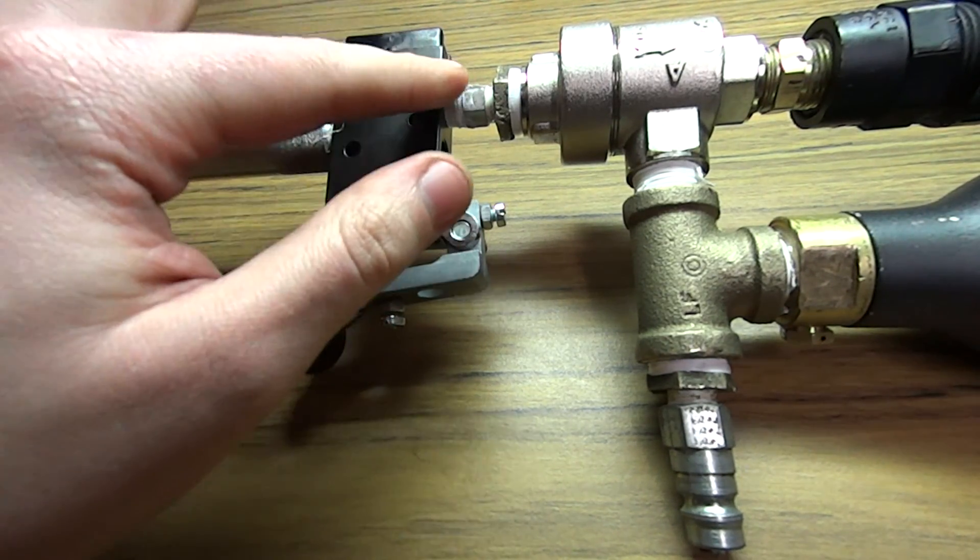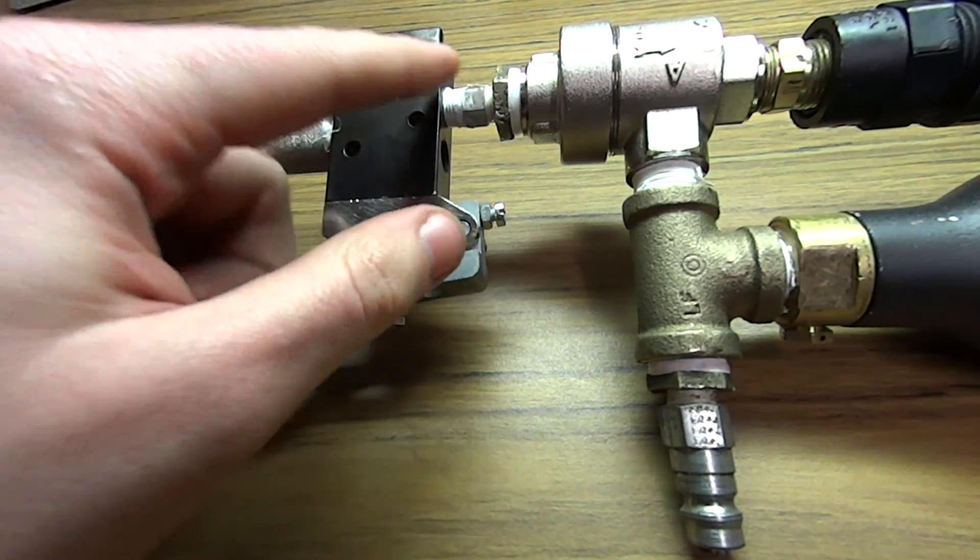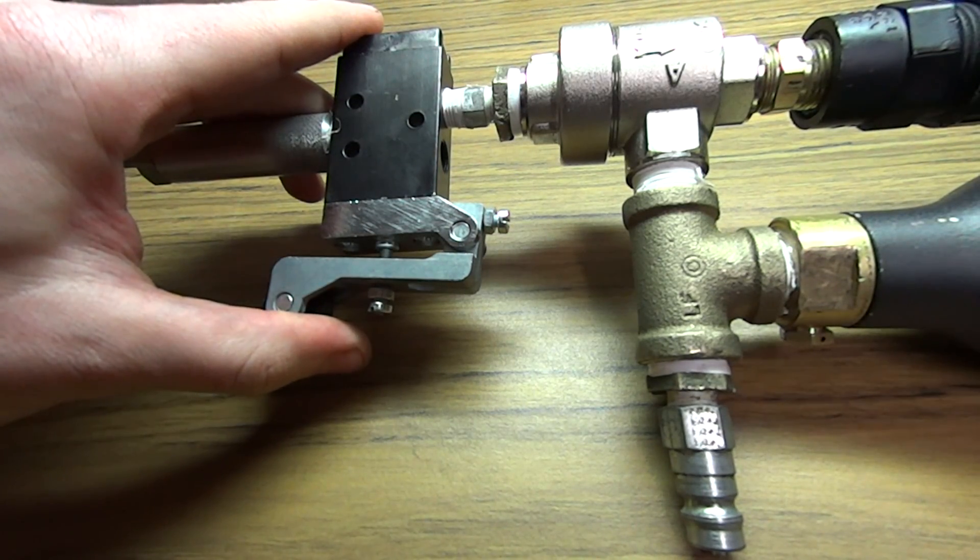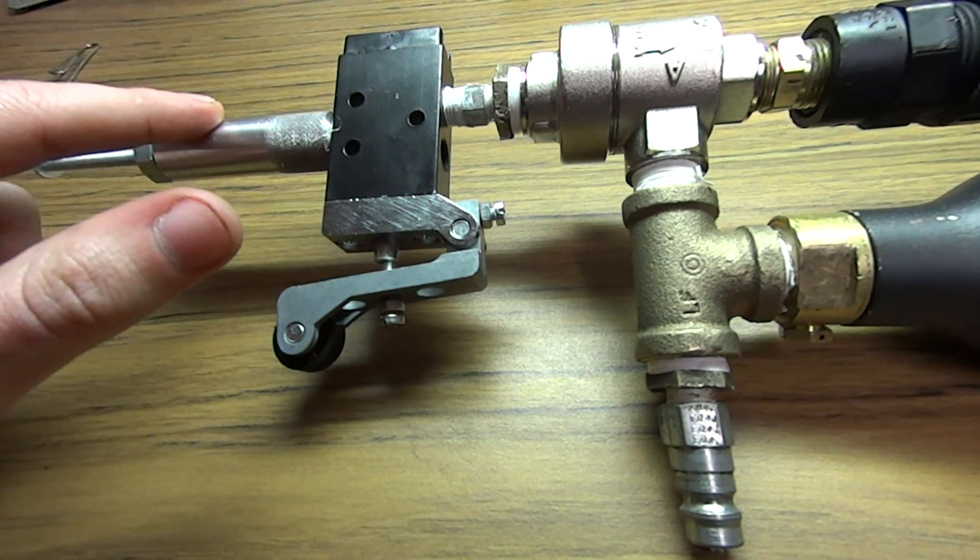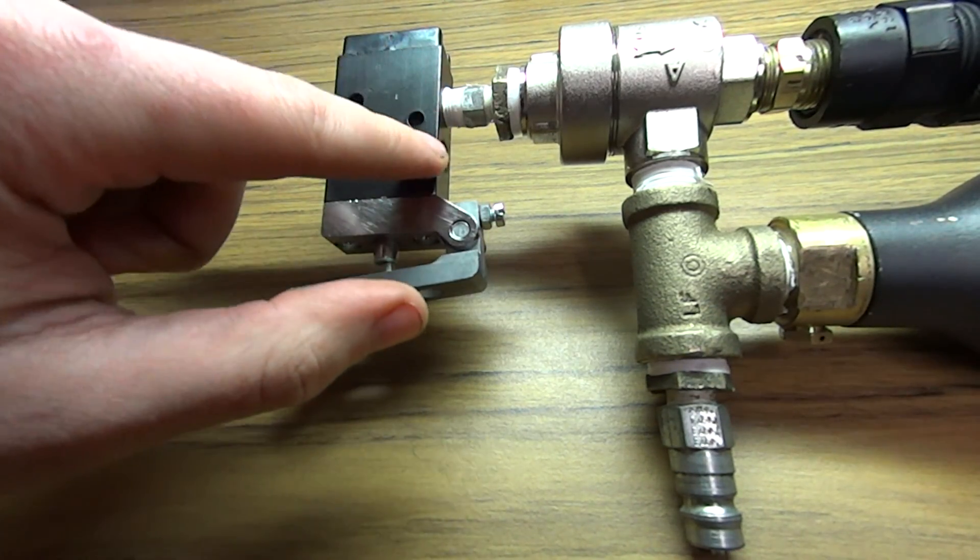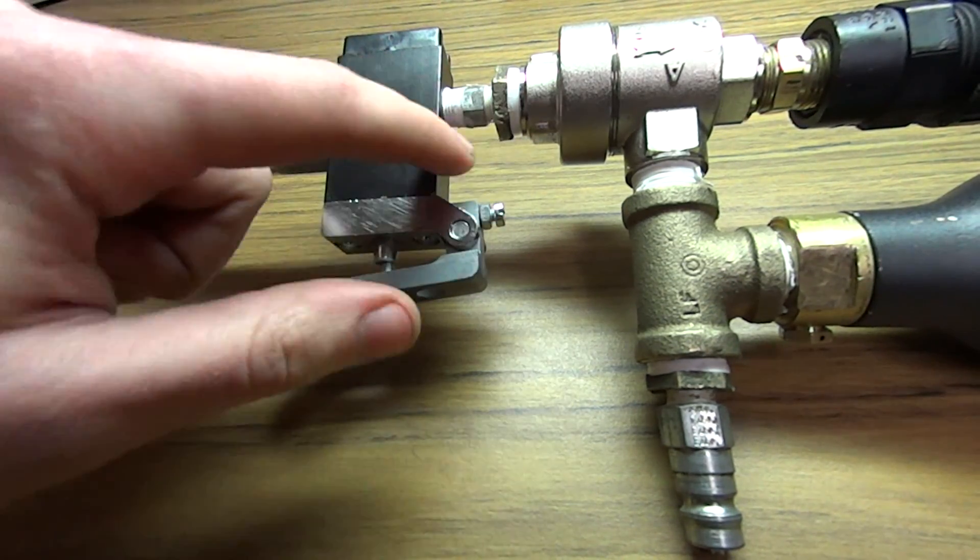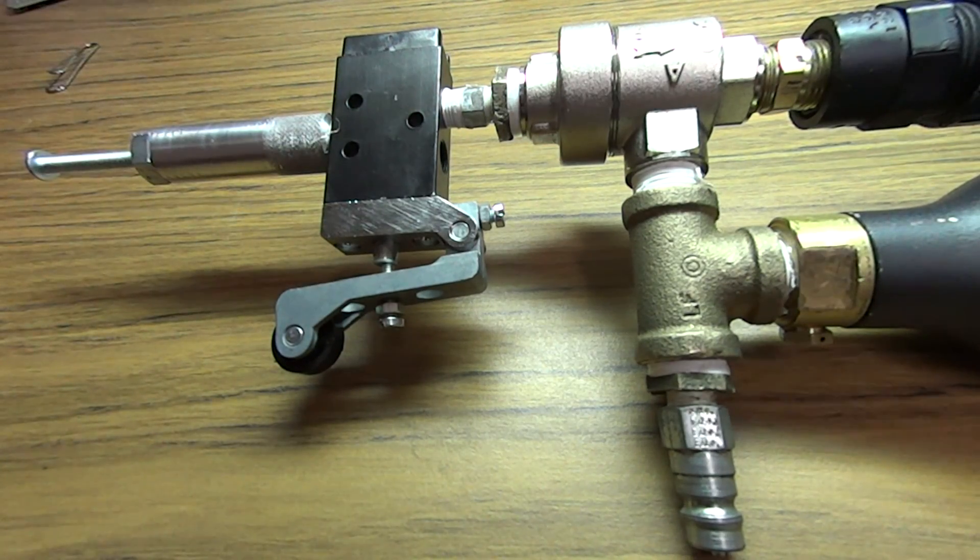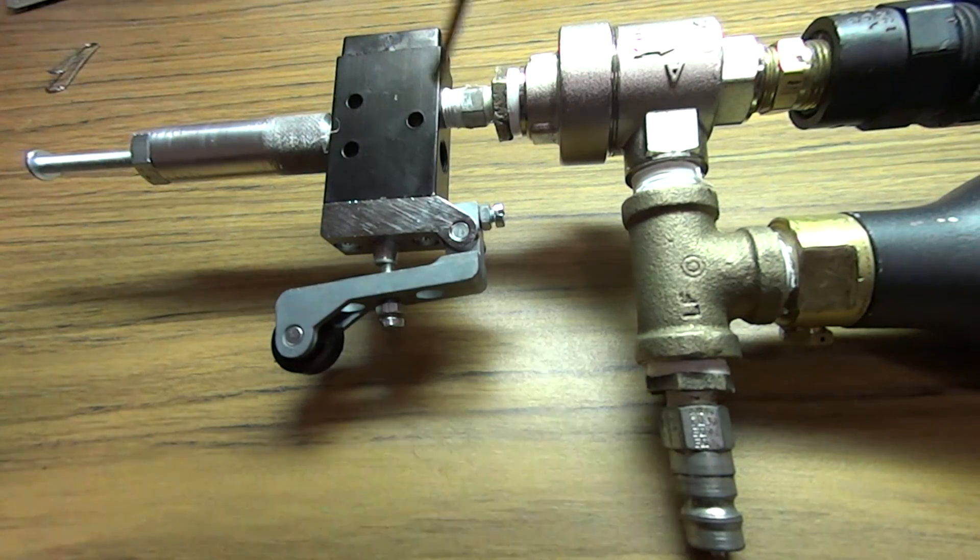So yeah, what happens is like I said, it dumps into this. When you pull it, it dumps into this chamber here and it stays in that chamber until you release it. And then the air from the chamber comes out of this port down here.